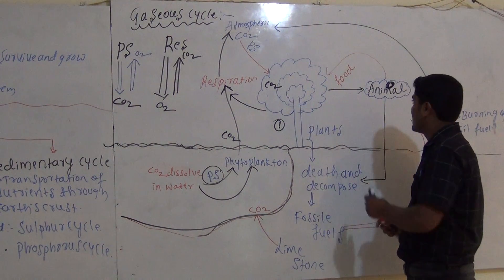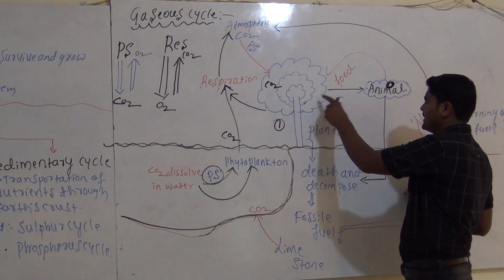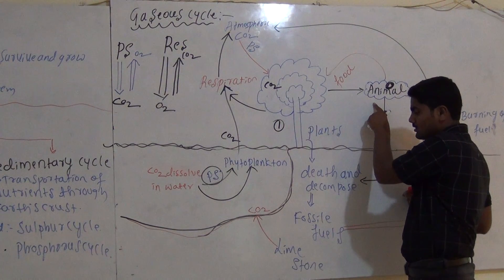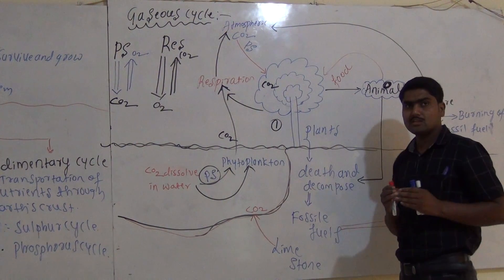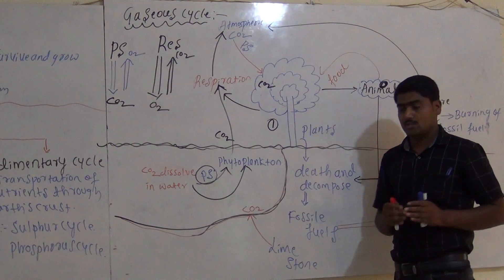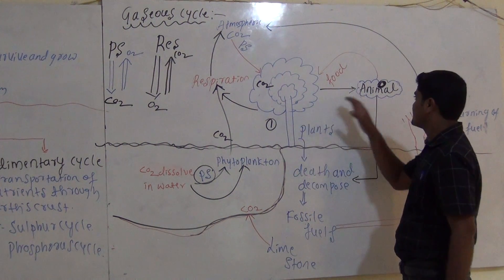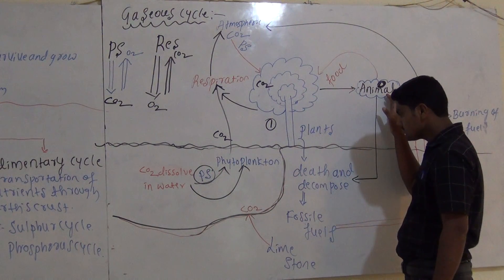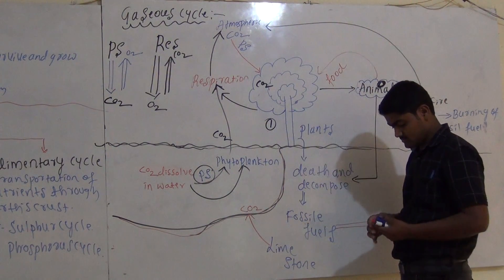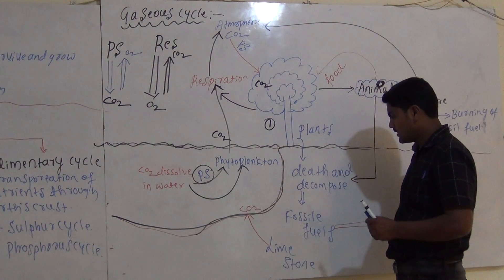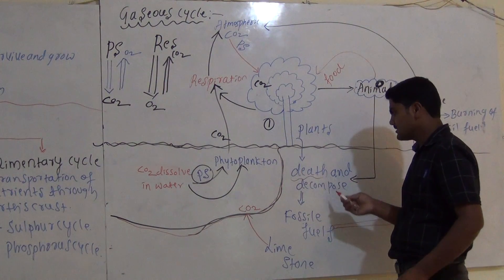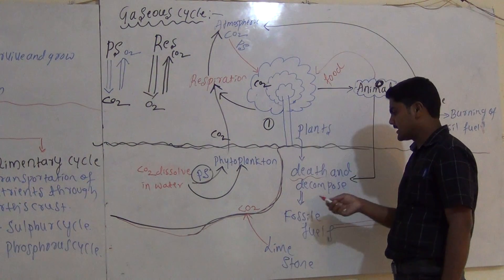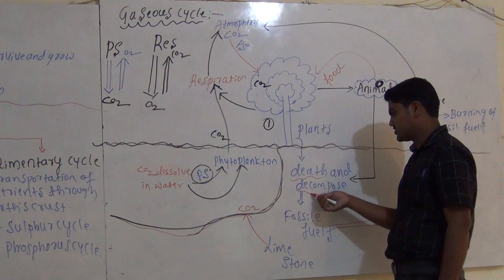These animals, whether producers or consumers, undergo death. Either plants or animals, they undergo death. After death, the dead body of plants or animals undergoes decomposition.